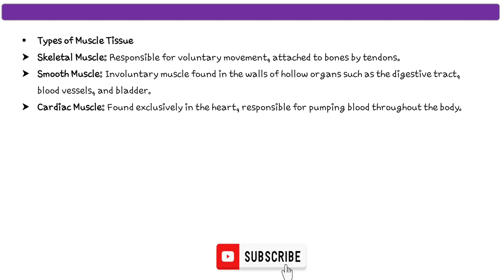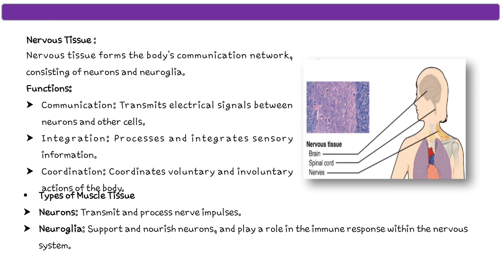The next tissue type is nervous tissue. Nervous tissue forms the body's communication network, consisting of neurons and neuroglia. Its functions are: communication — transmitting electrical signals between neurons and other cells; integration — processing and integrating sensory information; and coordination — coordinating voluntary and involuntary actions of the body.